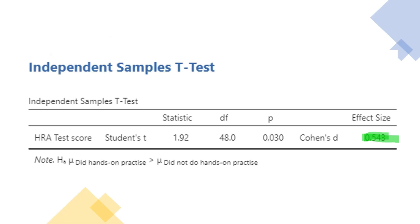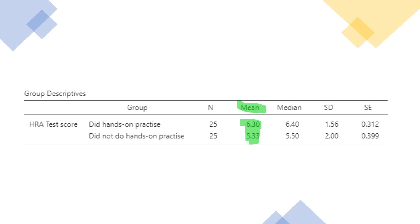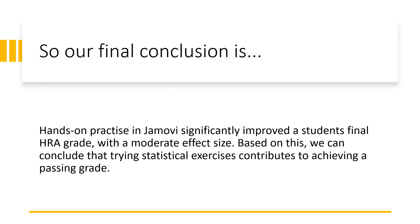We can find out the effect size. Here we see a Cohen's D of 0.543, so a moderate effect. Or we can visualize our data in a plot or in a table. So our final conclusion is hands-on practice in Jamovi significantly improves a student's final HRA grade with a moderate effect size.